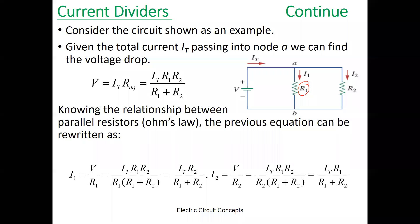Now let's consider the circuit as an example. Here we have only two resistors, R1 and R2, and we have IT — the total current coming out from the voltage supply V. We need to divide IT among R1 and R2. This is the meaning of the current divider — I want to find how much I1 and how much I2 come out of IT.